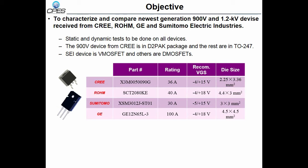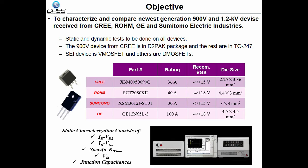The first part shows the static characterization, which is done by B1505 curve tracer of Agilent Technologies. Static characterization consists of the output characteristic, transfer characteristic, specific on-state resistance, threshold voltages of the devices, as well as their junction capacitances.